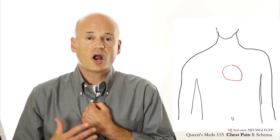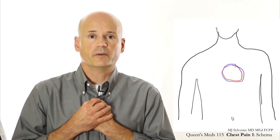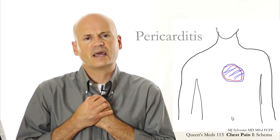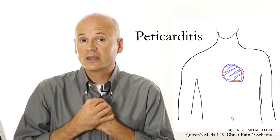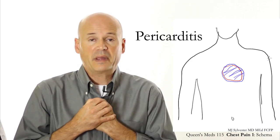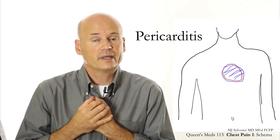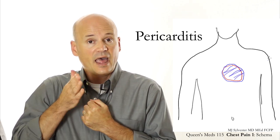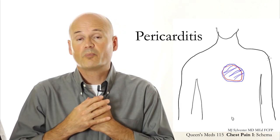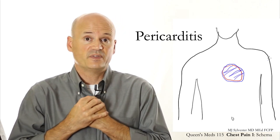For the second step moving outward, visualize the heart being wrapped by something called the pericardium. The pericardium can get inflamed and irritated — we call that pericarditis, and that's our second cause of chest pain. The Latin helps here: peri means beside or associated with, cardium relates to the heart, and itis means inflammation. So pericarditis is inflammation of the wrapping of the heart.